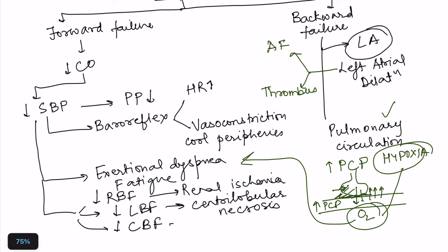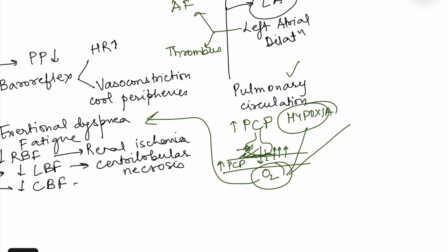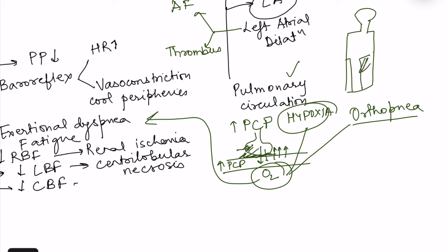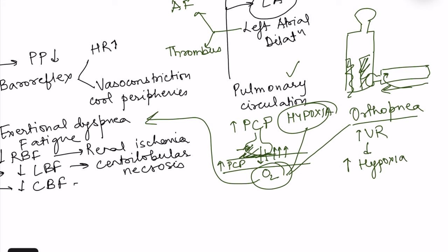This leads to exertional dyspnea and also orthopnea — breathlessness in the supine position. When standing, venous return is less due to gravity pooling blood in the legs. When lying supine, there is redistribution of blood and increased venous return to the central area. The supine position increases venous return and causes more blood to jam in the pulmonary circulation, since the right ventricle is pumping fine, increasing pulmonary edema, hypoxia, and breathlessness. So that is orthopnea.